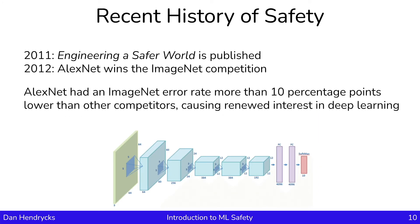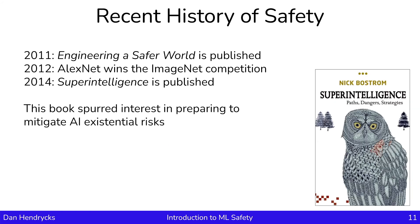Another event happened in 2012: AlexNet won the ImageNet competition. AlexNet had an ImageNet error rate more than 10 percentage points lower than the competitors, and this caused a renewed interest in deep learning. In 2014, Superintelligence was published. This book spurred interest in preparing to mitigate existential risks from advanced artificial intelligence. We'll be drawing on this book for our discussion of existential risks, although we'll try to reflect more current understanding of existential risks and artificial intelligence.